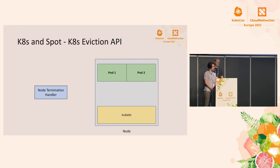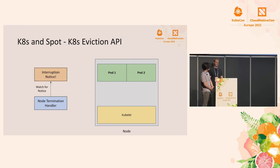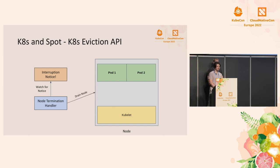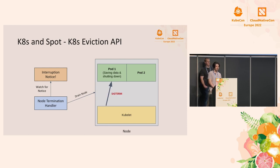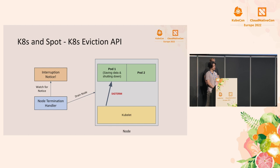The Kubernetes eviction API is what is used when you drain your node. The kubelet will be sending SIGTERM and SIGKILL based on this eviction API if it respects all the pod disruption budgets within your cluster. So let's say you have Node Termination Handler installed — you can configure it to watch for interruption notices and to drain the node when it sees one.